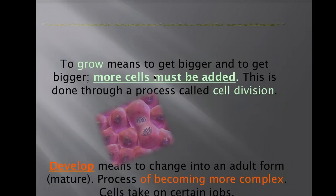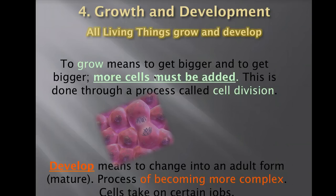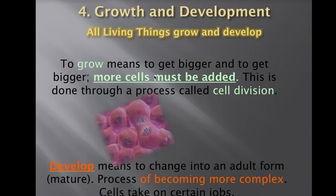Another characteristic of life is what we call growth and development. All living things are going to grow and develop, but growth and development are two separate things. Growth just means to get larger or to increase in size, and that's done through a process called cell division. Development means to become more complex or to mature — so when you're a baby compared to now as a teenager, you have developed and become more complex. Growth relates to sheer size; development means becoming more complex or having cells that take on different jobs.